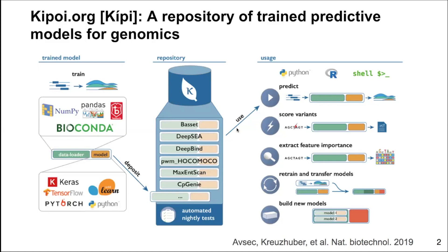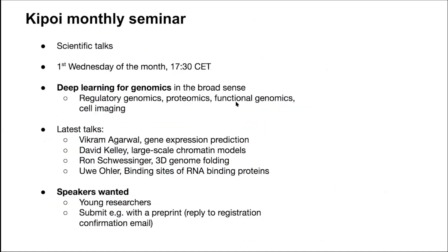We had a similar series centered around developers and direct users of KIPI, then started inviting speakers to talk about their science, which eventually developed into this separate meeting focused on scientific presentations. This KIPI monthly seminar focuses on scientific talks, held every first Wednesday of the month at 5:30 CT, covering research on applications of deep learning for genomics in a very broad sense — including regulatory genomics, proteomics, functional genomics, and cell imaging.